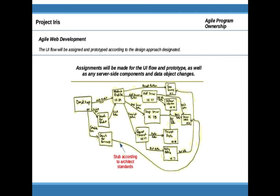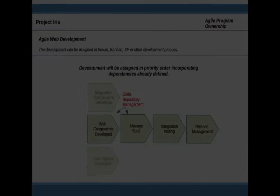They'll also determine if there are any components required on the server side, and if there are any changes to the data model that might require having the legacy team or the architects participate. It's very likely that the architect will pass to them information that some of their UI components will need to have stubbed responses, because the development on the services they'll be addressing may not be complete. It's only with the interaction between the technical architect, the business architect, and the UI team that the user interface will accomplish its purpose.